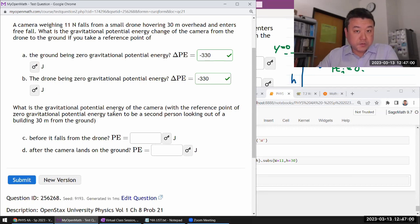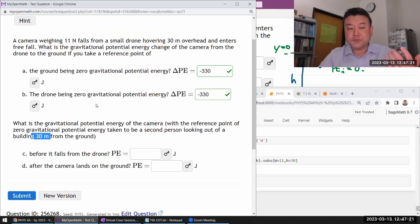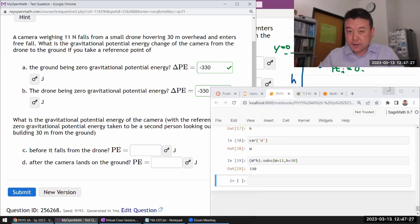Okay, so what is the gravitational potential energy of the camera with the reference point of zero gravity, the second person looking at a building 30 meters from ground? So this would be the same reference point as the reference point of the drone because they are both at 30 meters, unless I happen to have gotten lucky with the randomization.